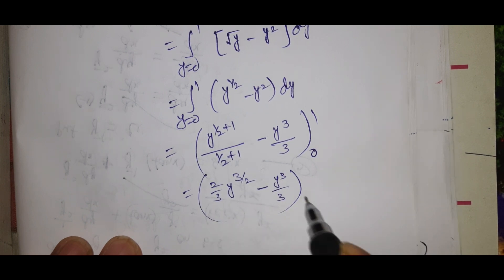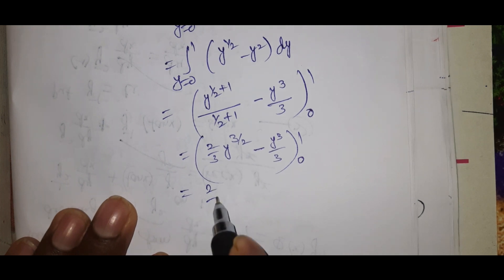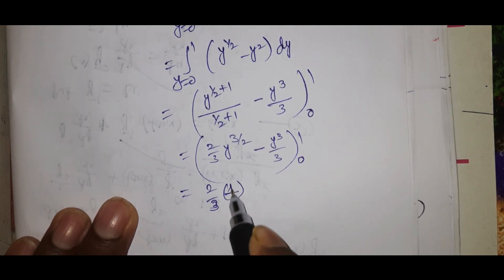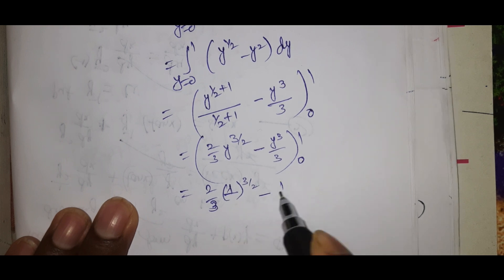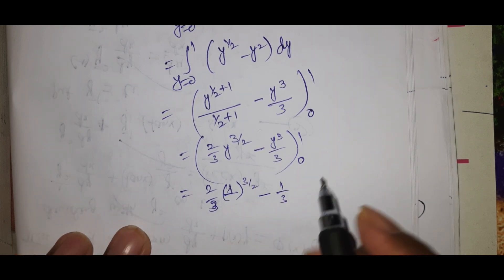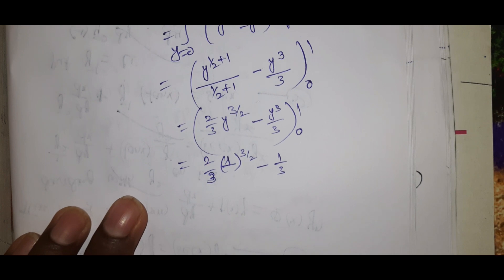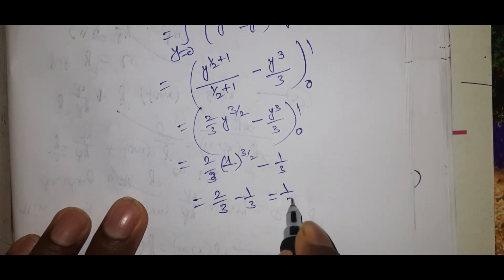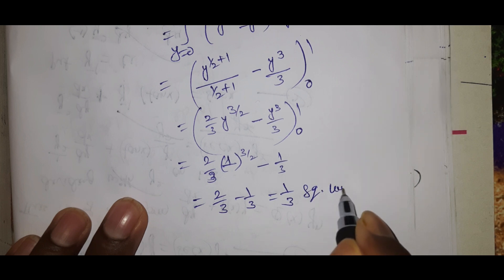Applying the upper limit 1: 2/3(1)^(3/2) - 1/3. The lower limit is 0. This equals 2/3 - 1/3 = 1/3 square units.